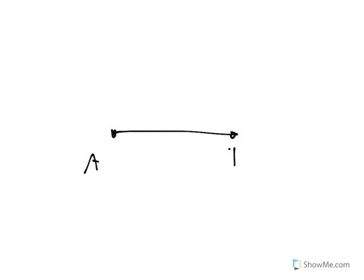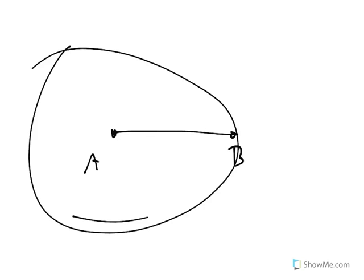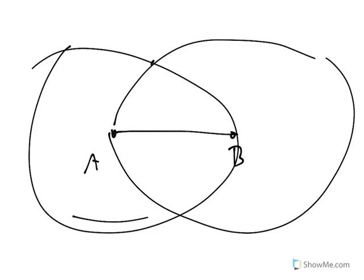Making a midpoint — and really an entire perpendicular bisector of a line segment — can be accomplished by making a circle with center A going through B, and a circle with center B going through A. Essentially we have two equilateral triangles, and when you connect those two vertices you will get a perpendicular bisector.